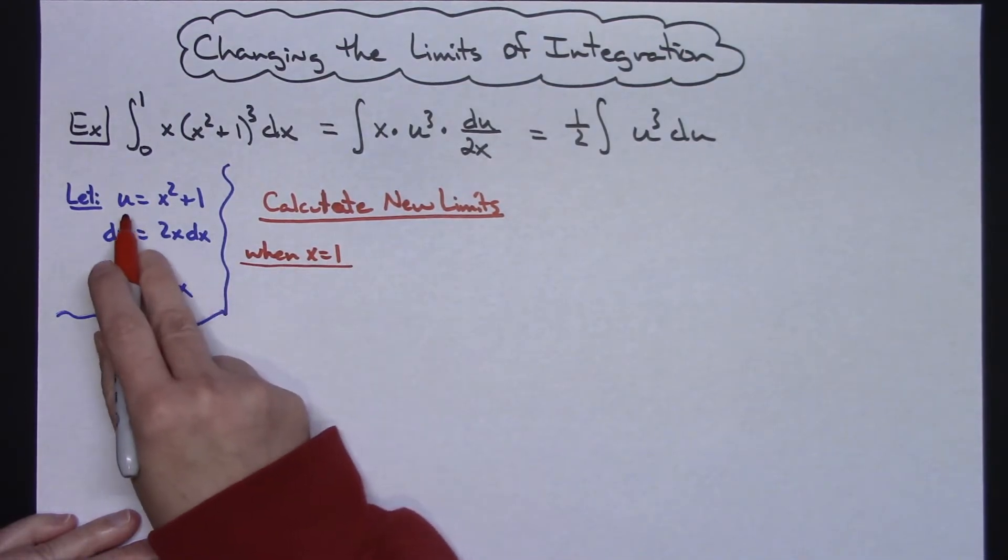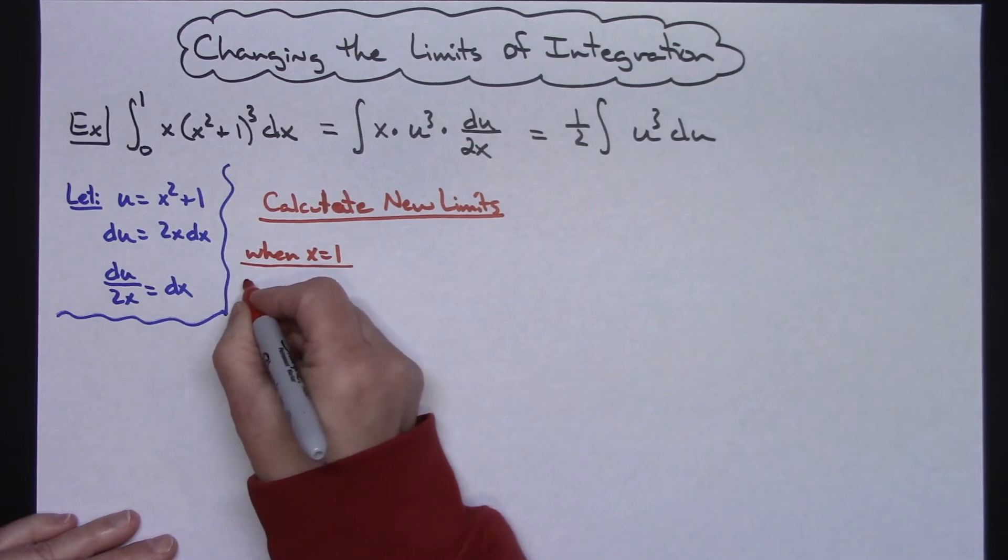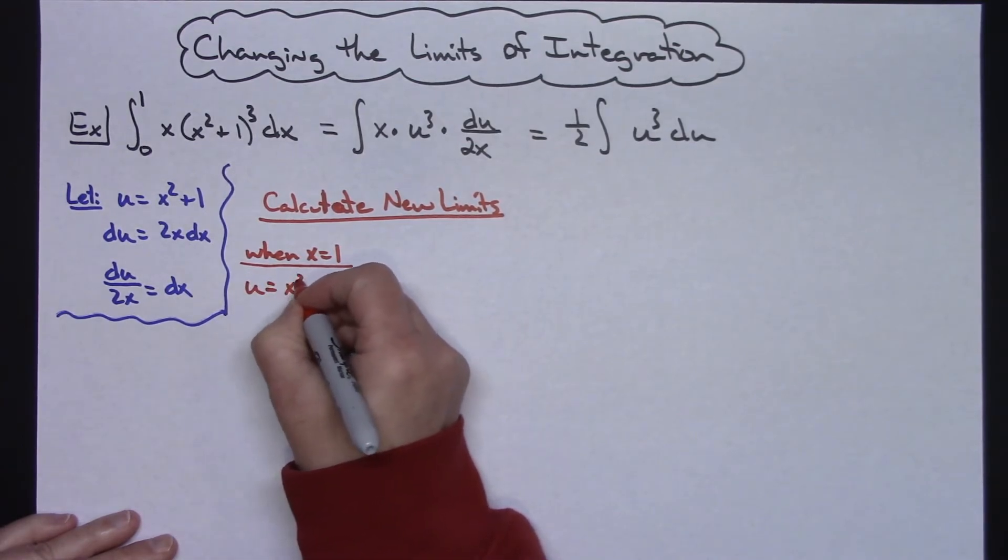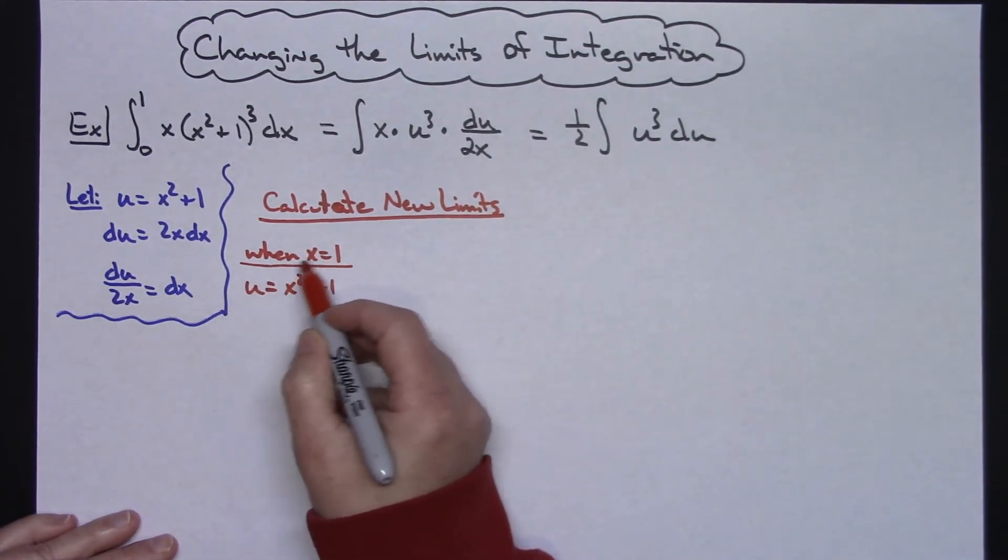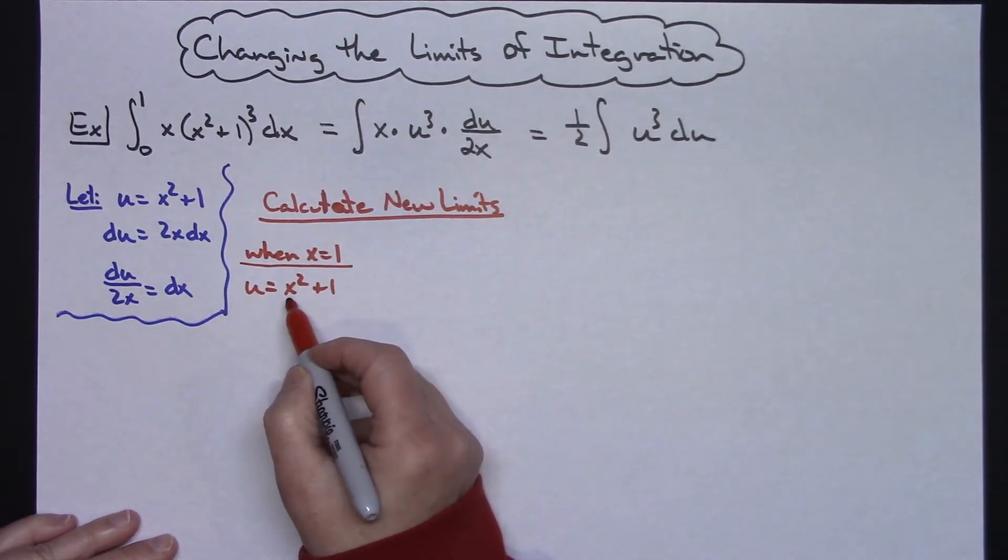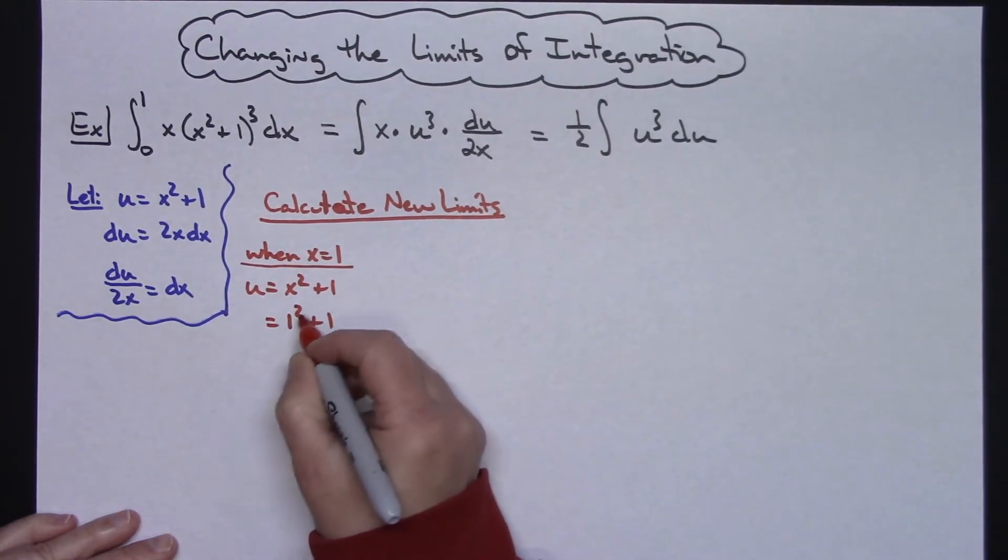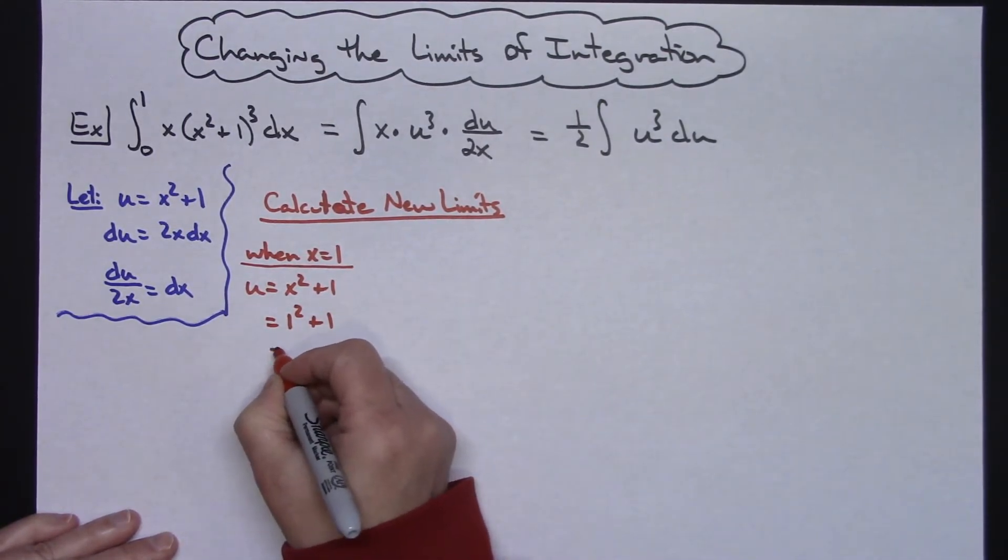So when x equals 1, what I'm going to do is I'm going to come back over here and I'm going to say, okay, well, I originally said that u is equal to x squared plus 1. So u equals x squared plus 1. Now I want to change that upper limit when x equals 1. So when x equals 1, now I can replace 1 in right there. 1 squared plus 1. 1 squared plus 1 is just going to give me a 2.